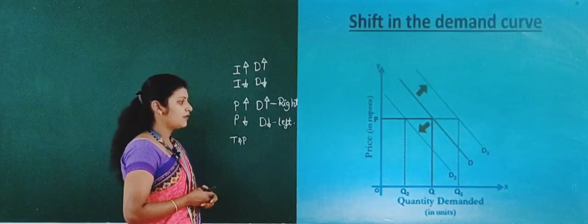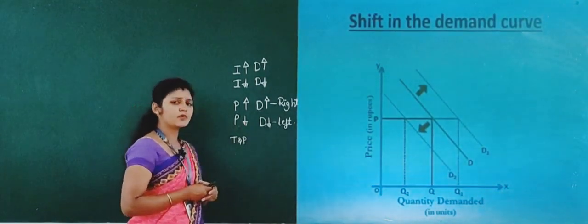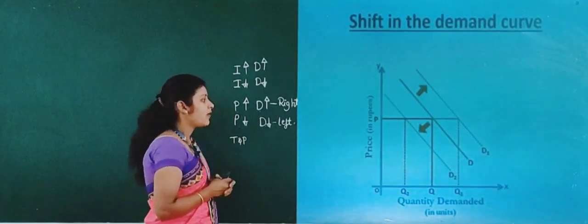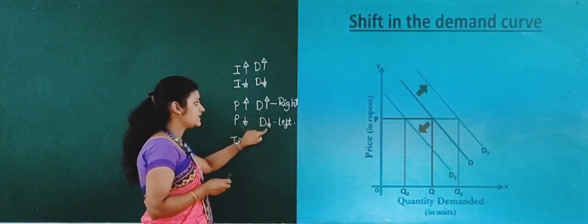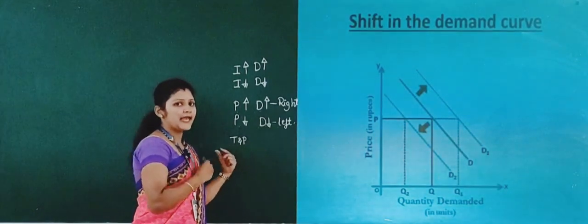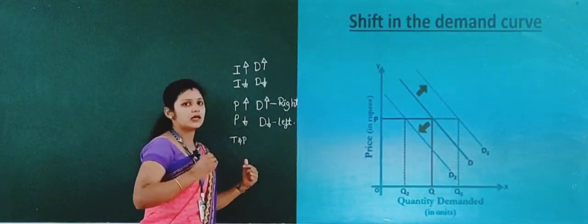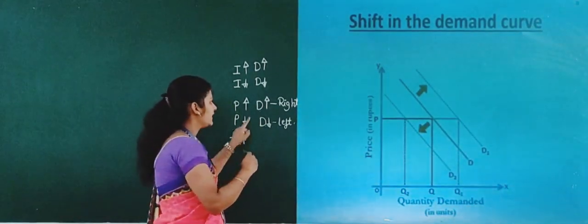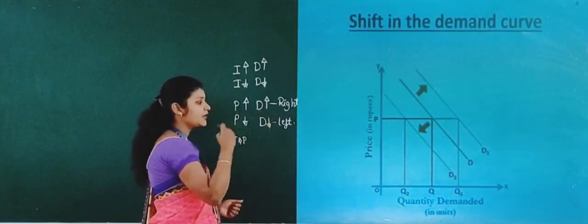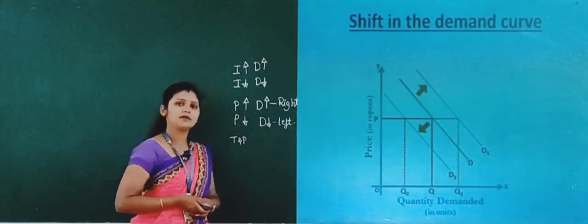In the diagram, on the X-axis we have measured the quantity demanded and on the Y-axis we have measured the price of the goods. When demand decreases, the demand curve shifts to the left — from DD to D2. When demand increases, it shifts to the right — from D2 to D1. This diagram illustrates the shifts in the demand curve.